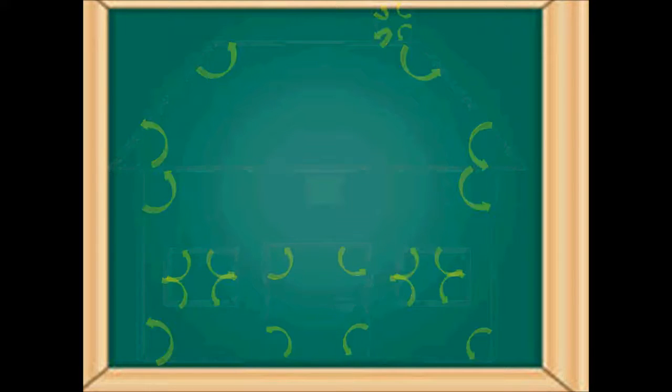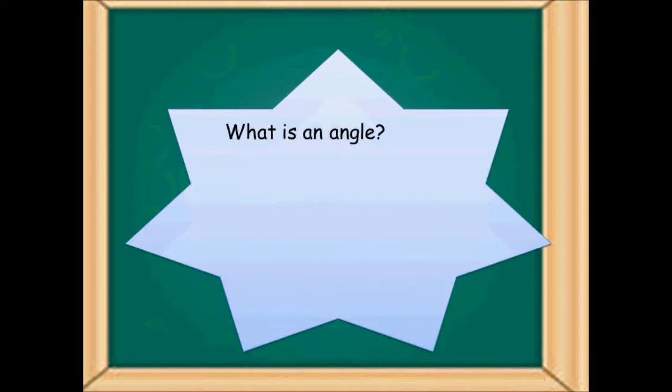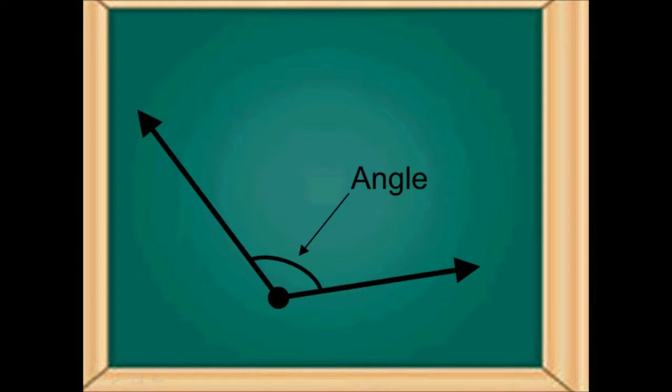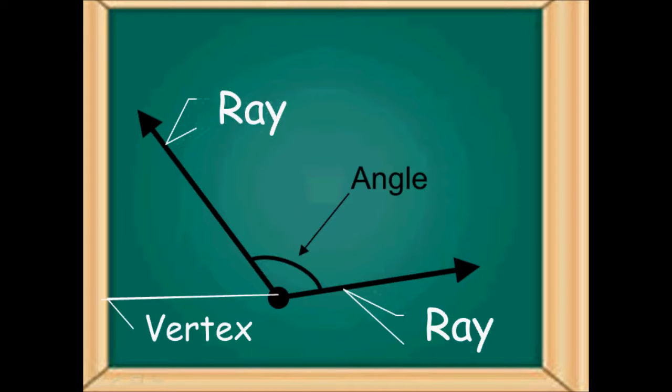So one more time, what is an angle? An angle is the space between two rays which join at a point called the vertex. Here we have again the picture of the angle and I want to clarify the parts of it.